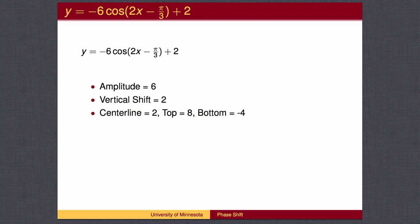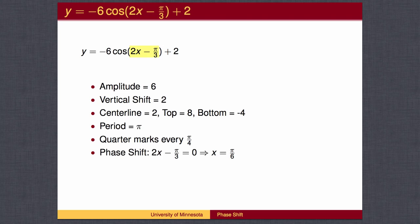A vertical shift of 2, so the center line will be at 2, the top will be 6 above 2 which is 8, and the bottom will be 6 below 2 which is negative 4. The period is 2 pi over b, which is 2 pi over 2, or pi. The quarter marks happen every pi over 4. To find the phase shift, we set the angle 2x minus pi over 3 equal to 0 and solve for x. The phase shift is pi over 6. We find a common denominator between pi over 4 and pi over 6, which is 12, and rewrite the quarter marks and phase shift in terms of pi over 12, marking the x-axis every pi over 12.